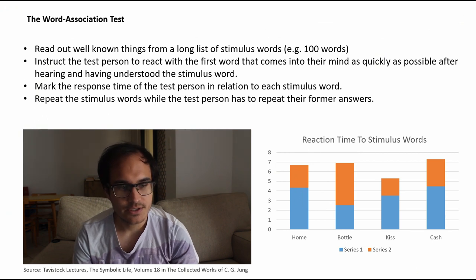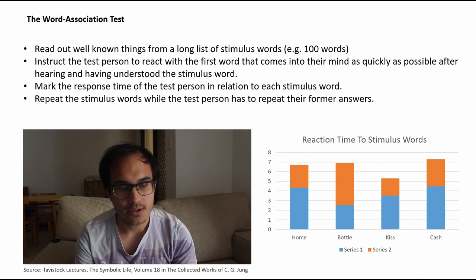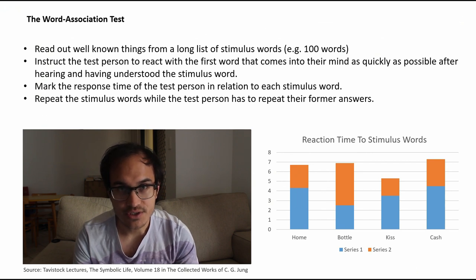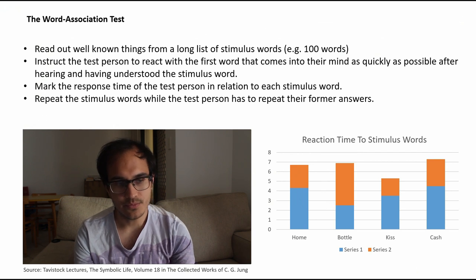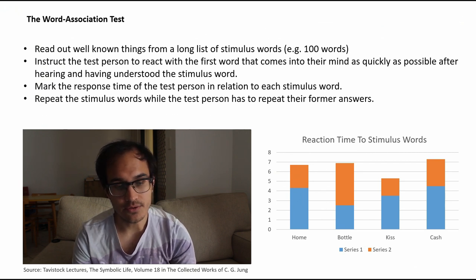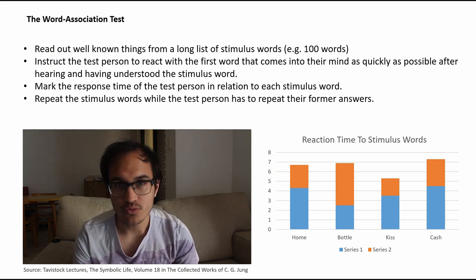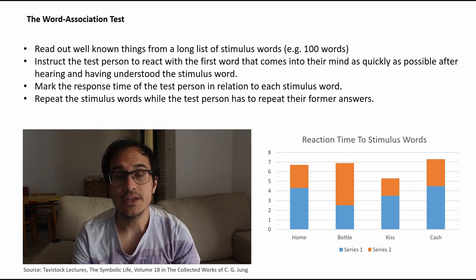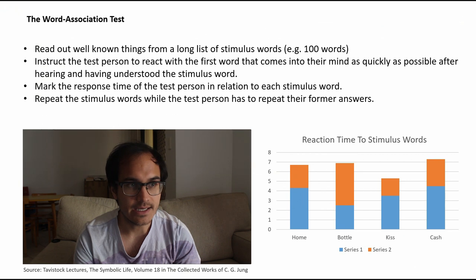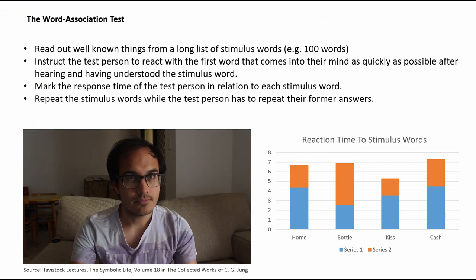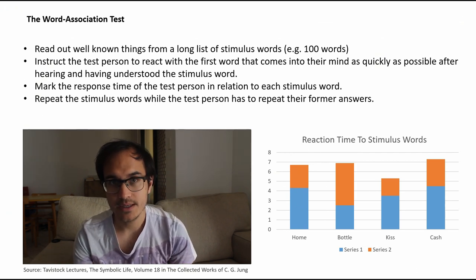The word association test — Jung helped develop this test. He was also called upon by judges for difficult criminal cases to apply this test, and he used it on some of his patients. You read out a well-known list of stimulus words, probably about a hundred, and instruct the test person to instantly reply with a response to each word. For example: I say knife, you say bomb; I say pig, you say chicken; I say home, you say door.